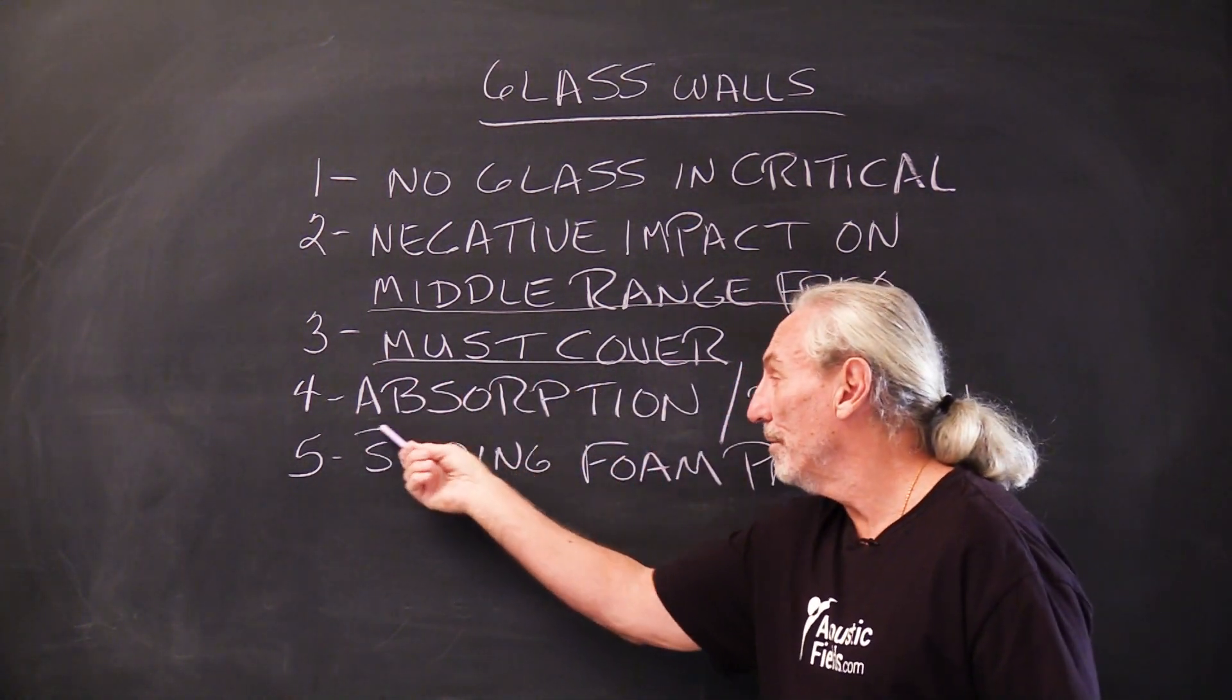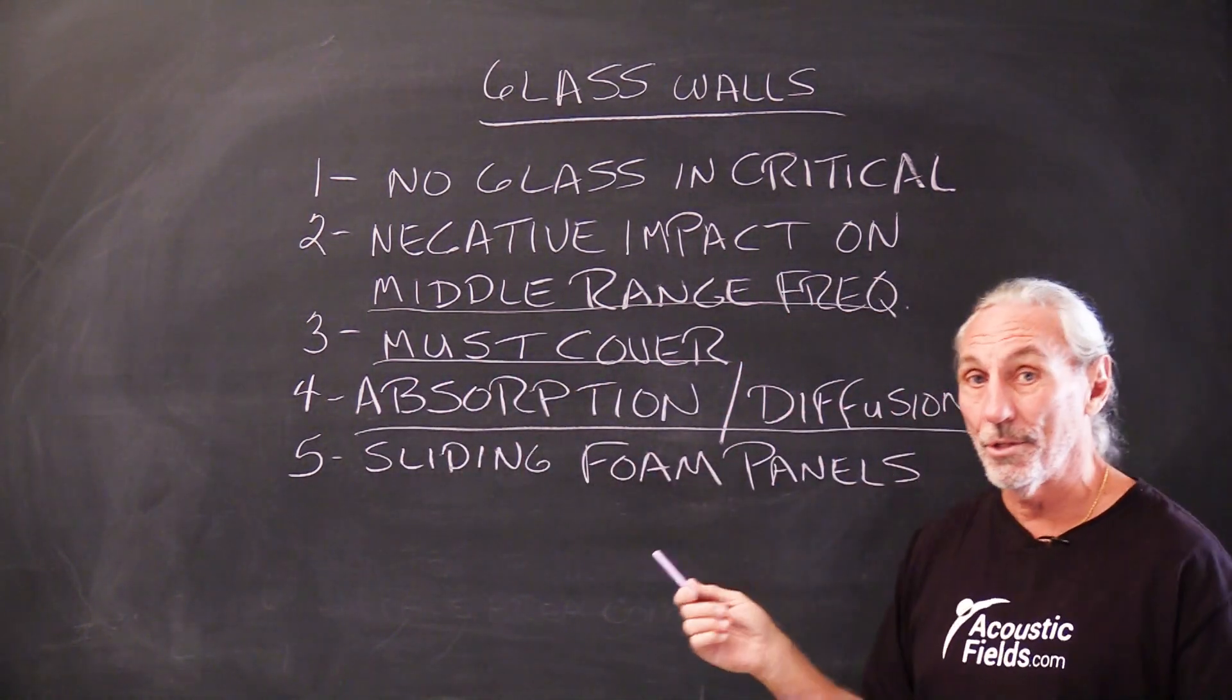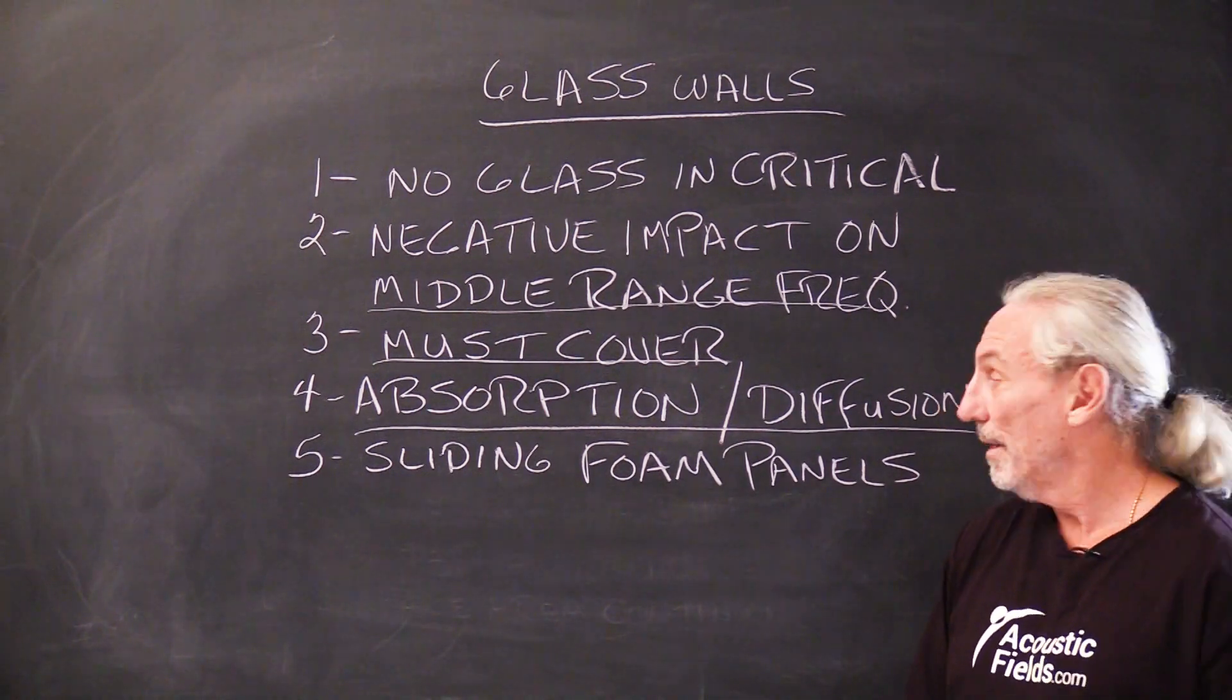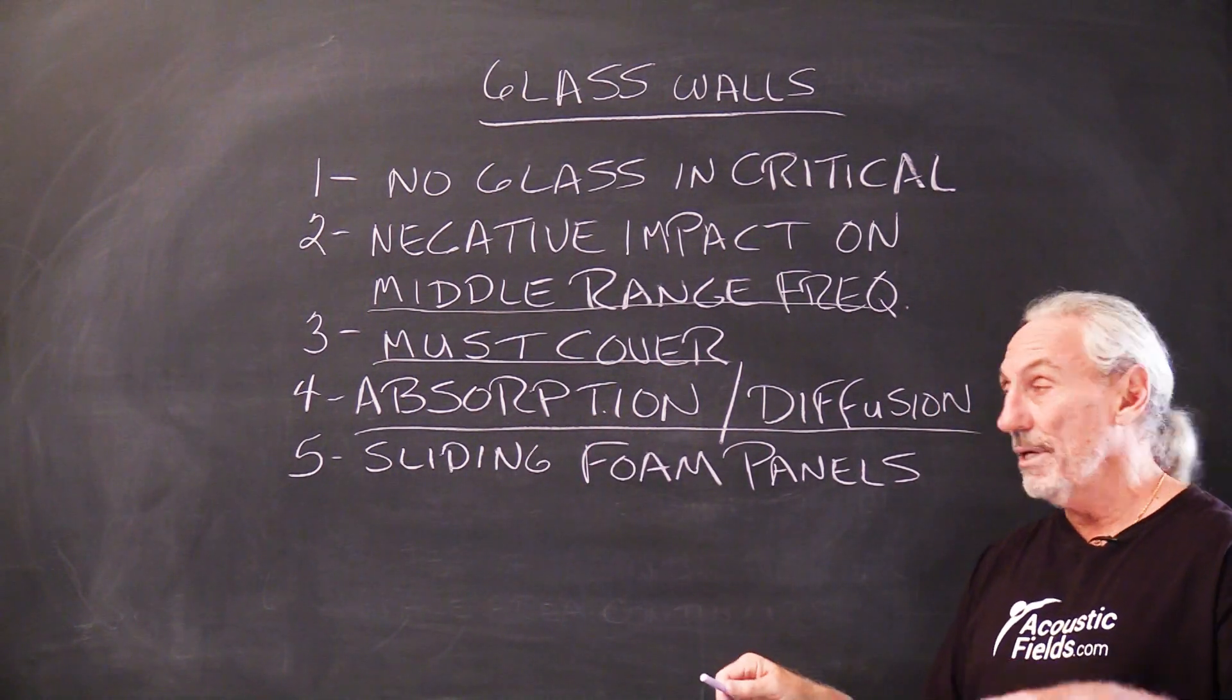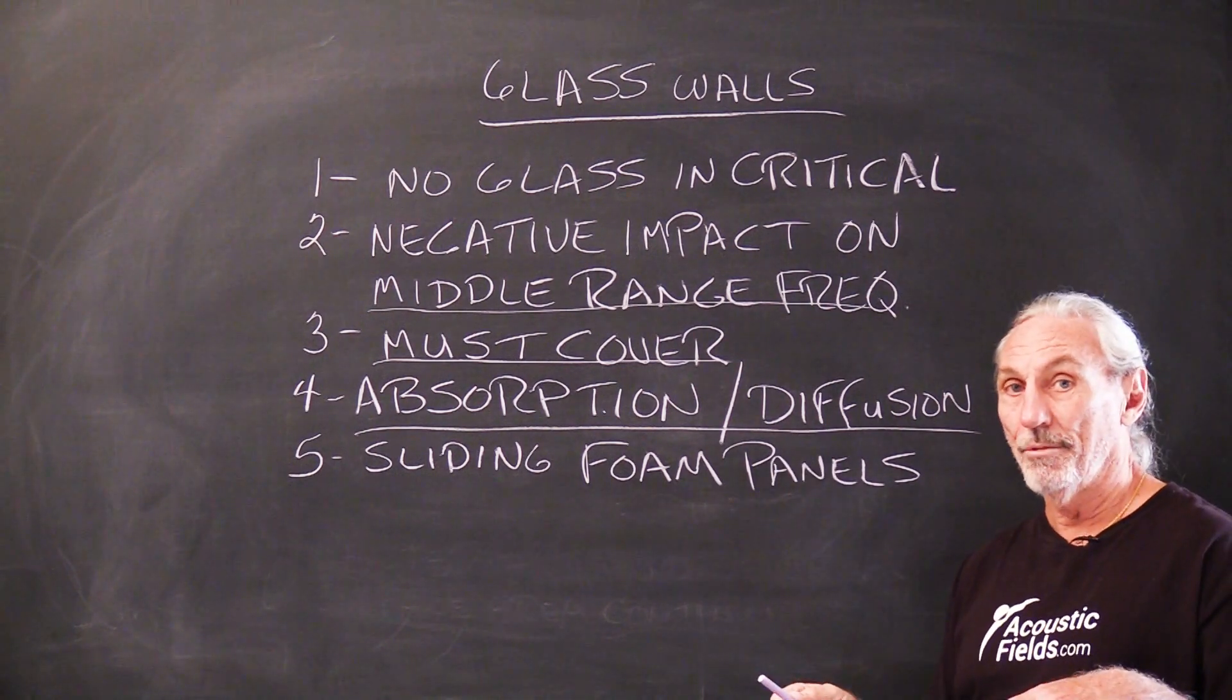So we got to cover it. Now, what are our choices? Well, we have two: absorption and diffusion. Those are the only two kinds of treatment. Absorption is low, middle, and high frequency. Diffusion is middle and high frequency management.